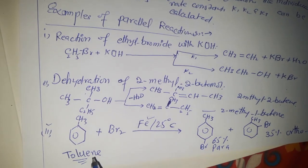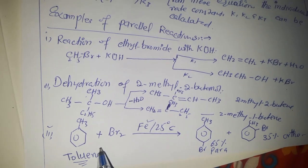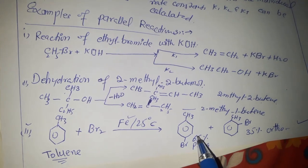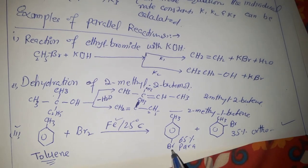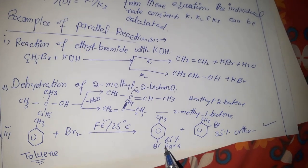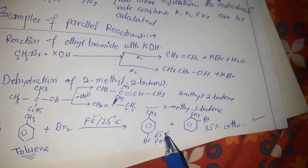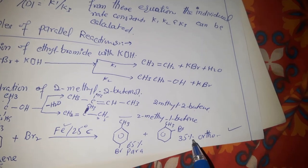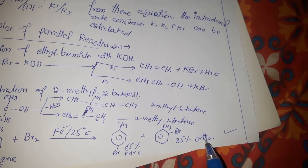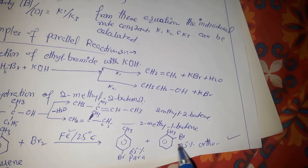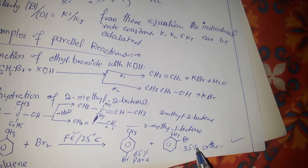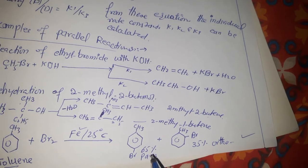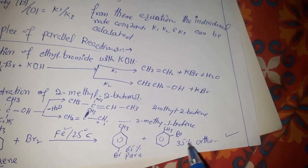A third example is given in the book: when toluene is treated with bromine at 25°C, we get two products. The mixture contains 65% of one product and 35% of ortho-bromotoluene, so we are getting two different products with different percentages. The one with the higher percentage is the major product.